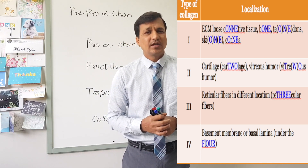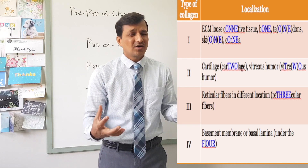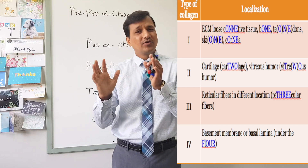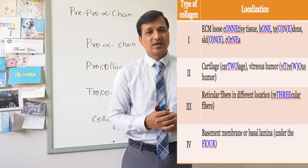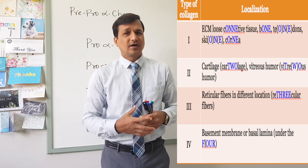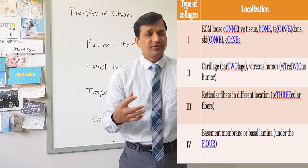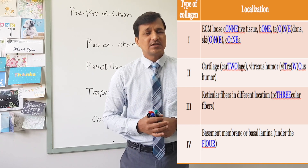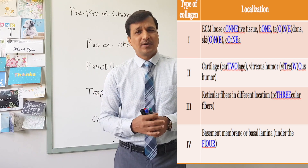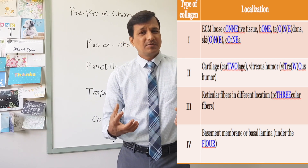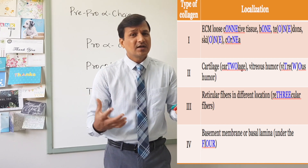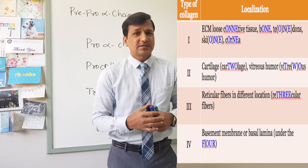Type 2 collagen is generally found in cartilaginous tissue — if you read it as 'cartilage-2,' it is type 2 collagen. Type 3 collagen molecule is found in reticular fibers, which are present around organs and other tissues — 'reticular' means type 3 collagen. Type 4 collagen is generally present in the basal lamina or basement membrane of the glomerulus and stratified squamous epithelial cells — 'under the floor' reads as 4, so that is type 4 collagen.